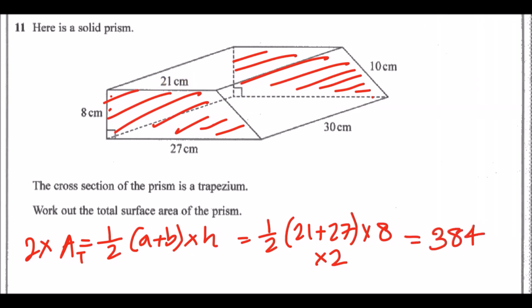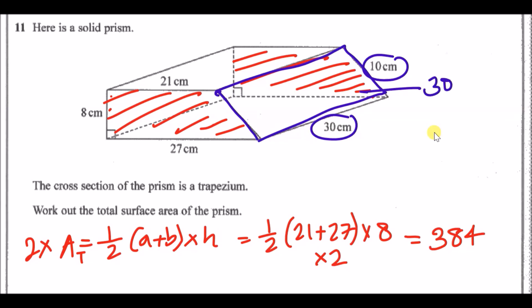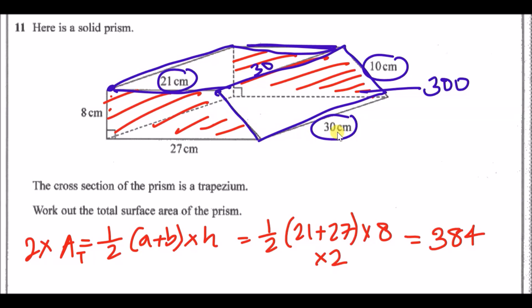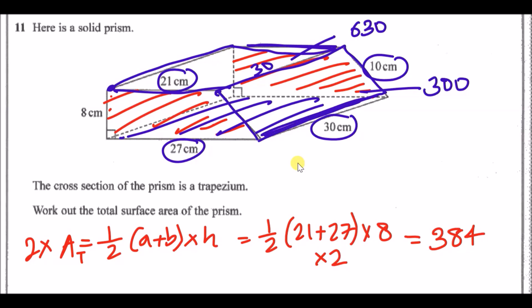Now the rectangles. The slanted/side rectangle has dimensions 30 × 10 = 300 cm². The top rectangle has dimensions 21 × 30 = 630 cm². The bottom/ground rectangle has dimensions 27 × 30 = 810 cm².